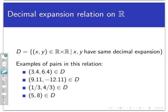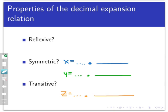Let's define a relation called d on the set r of real numbers as follows. We're going to say x, y belongs to d if x and y have the same decimal expansion — meaning the digits to the right of the decimal point. For example, 3.4 and 6.4 belong to d, as do 9.11 and negative 12.11, also 1/3 and 4/3 because both have decimal expansion .333 repeating, and 5 and 8 because the decimal expansion of an integer is just .0.